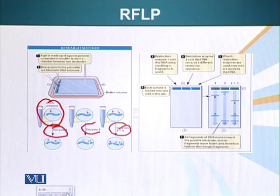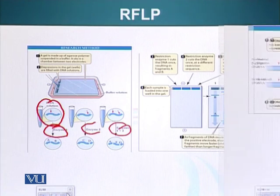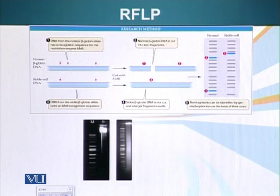Using enzymes 1 and 2 together cuts the DNA two times, generating three fragments, as you can see here. Enzyme 1 and enzyme 2 can each cut our sample DNA only once, but when we add them together they cut two times and generate three fragments. So basically we can see that the enzymes are cutting DNA at specific locations, and we can use this information.